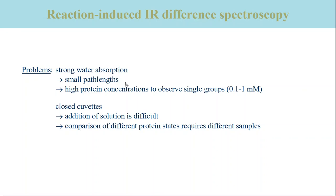Therefore the protein concentration needs to be relatively high in order to observe single spectra groups in the range of 0.1 to 1 millimolar. Also, adding a liquid to an existing sample is not as comfortable as, for example, in visible spectroscopy, since the infrared cuvettes are usually closed and have to be opened and reassembled for the next measurement.